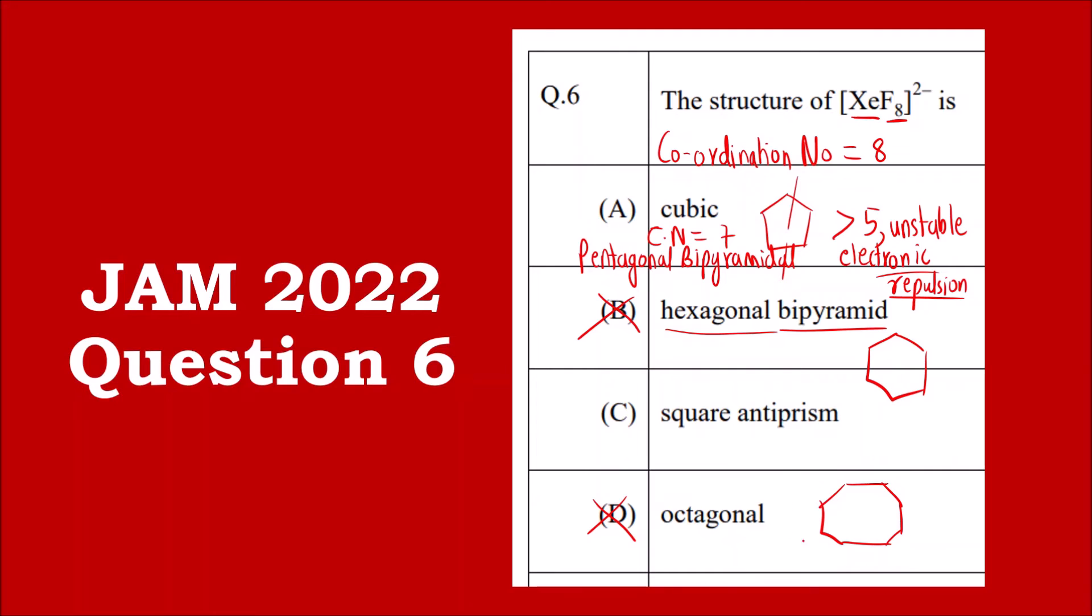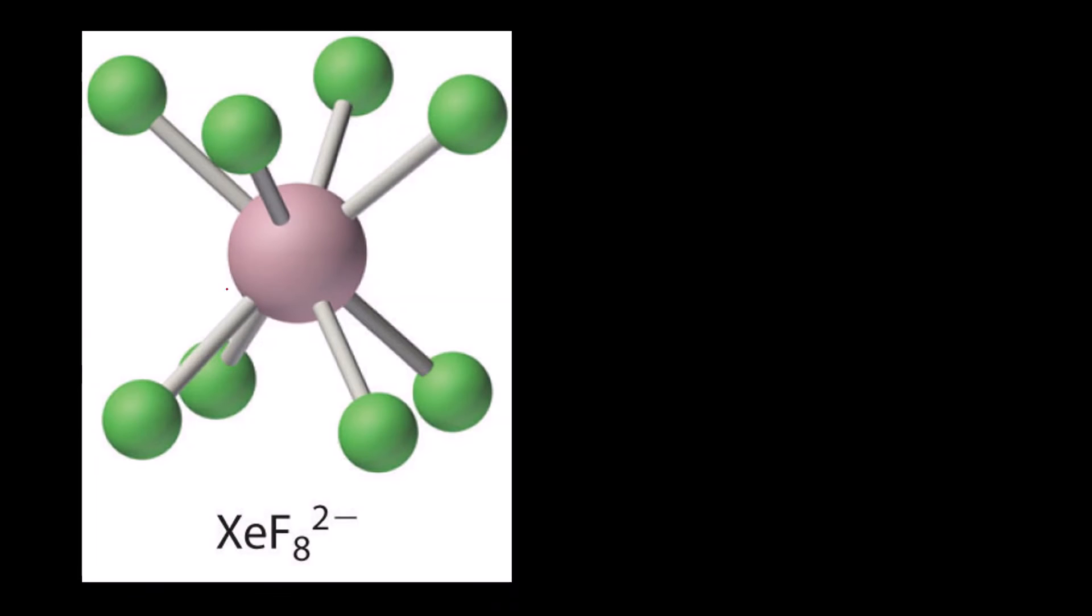Now the question is between cubic and square antiprism. So you must know that the geometry is square antiprism. Let us see what is the structure of square antiprism. This big atom is xenon and these green ones are eight fluorine atoms.